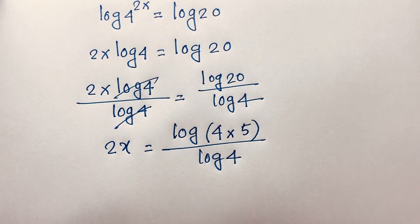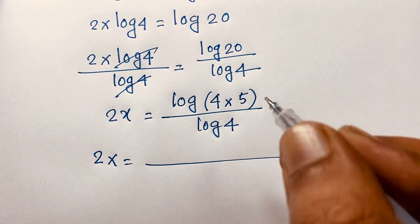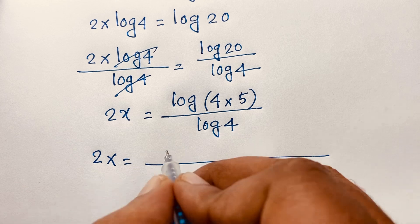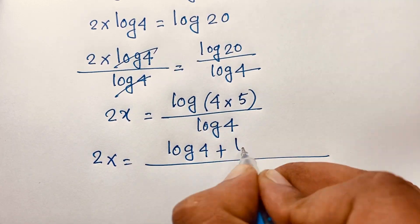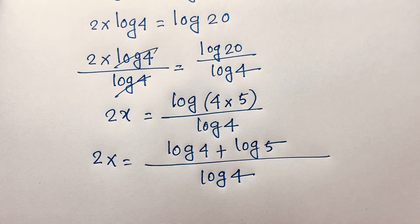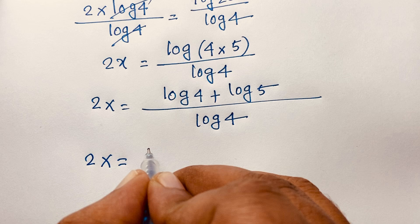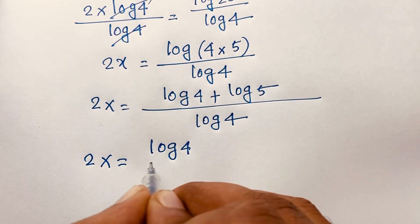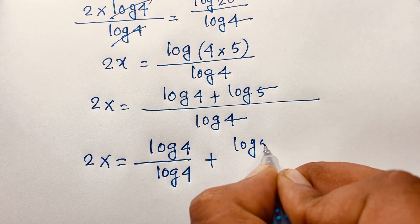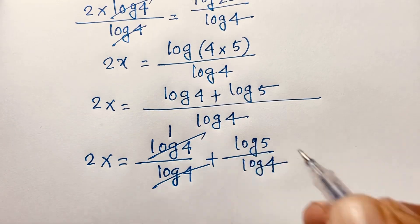You know that 20 is 4 times 5. Now, using the logarithm law log(AB) equals log A plus log B, I can write log 4 plus log 5 over log 4. You can see the log 4 terms cancel out to give 1.